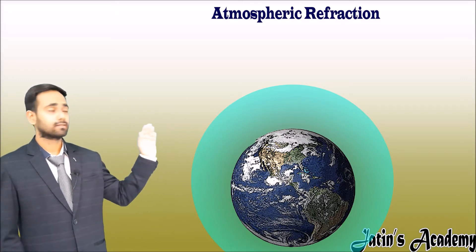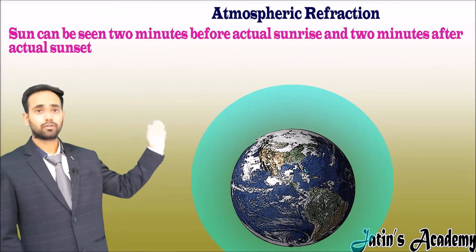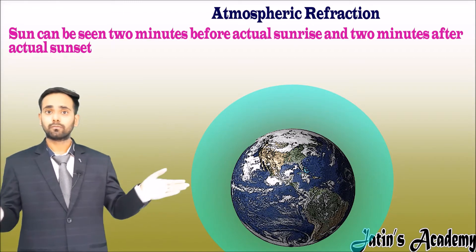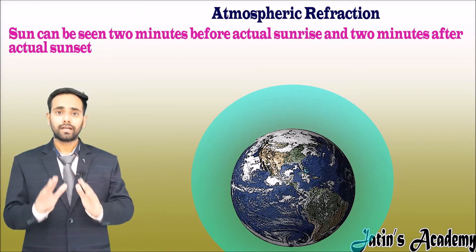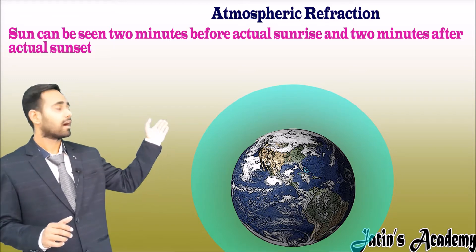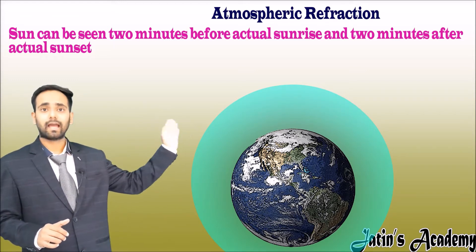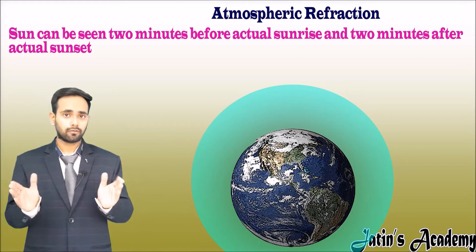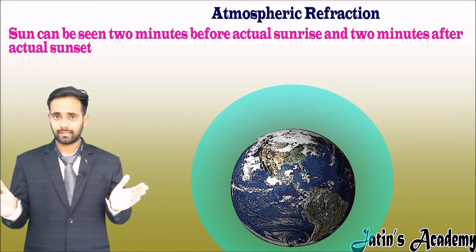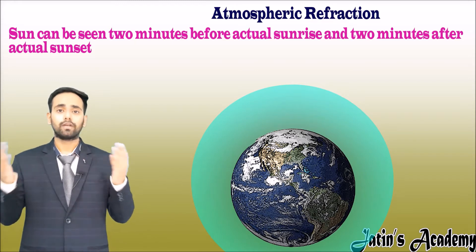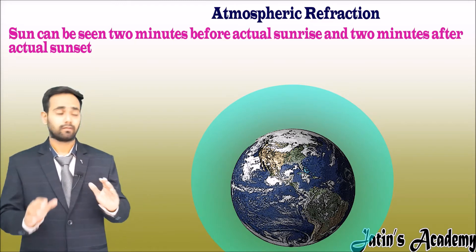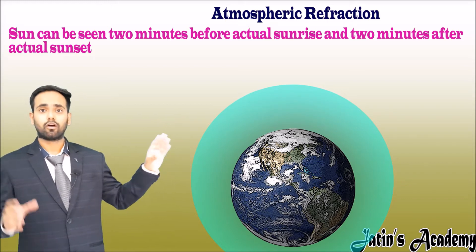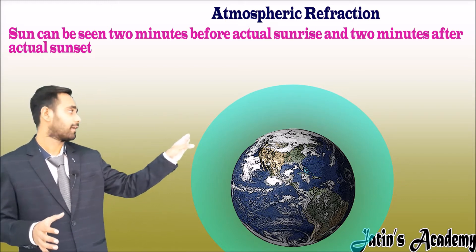The first natural phenomenon due to atmospheric refraction is that the Sun appears two minutes before the actual sunrise and two minutes after the actual sunset. This means there is an advance of sunrise and a delay of sunset by two minutes. To understand this, let us first understand how a person is able to see the Sun.